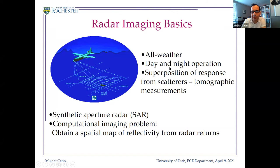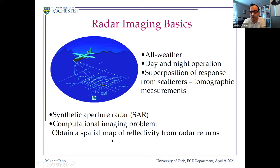Let me start with a brief introduction to radar. Radar is an all-weather imaging modality that can work in day and night. You have a radar sensor on an airborne or space-borne platform interested in imaging a ground patch. You send and receive electromagnetic pulses as the aircraft or satellite traverses a flight path, collecting signals from many different observation angles, effectively synthesizing a virtual long antenna along its path — that's why this is called synthetic aperture radar. The computational imaging problem is: given all this data, invert and obtain a spatial map of reflectivity over a region of interest.